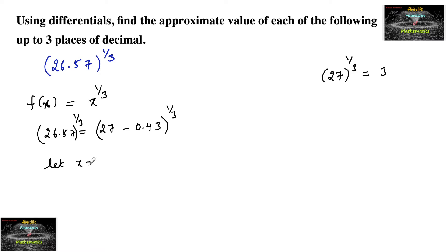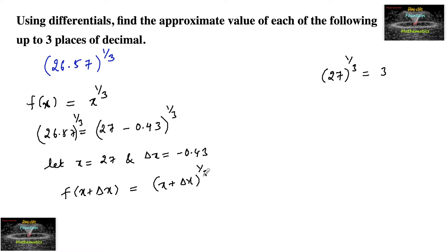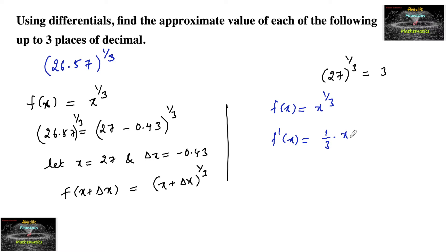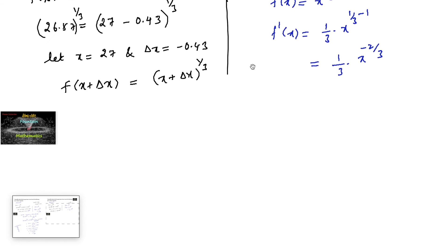Let x = 27 and Δx = −0.43, so that f(x + Δx) = (x + Δx)^(1/3) where x = 27 and Δx = −0.43. Since f(x) = x^(1/3), let us differentiate: f'(x) = (1/3) · x^(1/3 − 1) = (1/3) · x^(−2/3). Now, using differentials, let us find the approximate value.